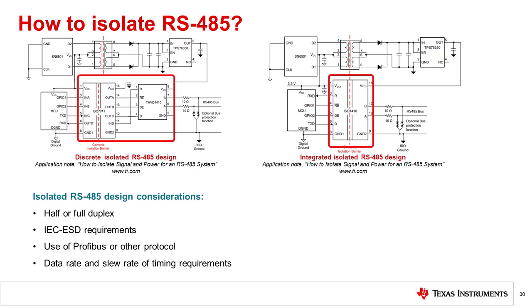Typical design considerations for isolated RS-485 interfaces include the selection of half or full duplex, IEC ESD requirements, use of PROFIBUS, and the data rate of the isolator including consideration of slew rate and timing requirements.